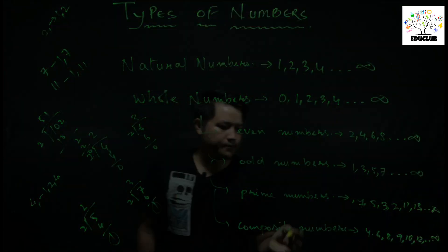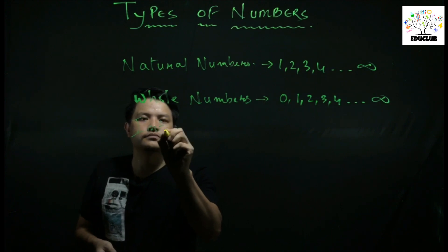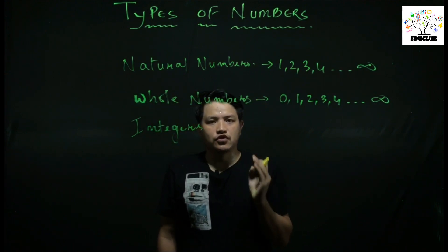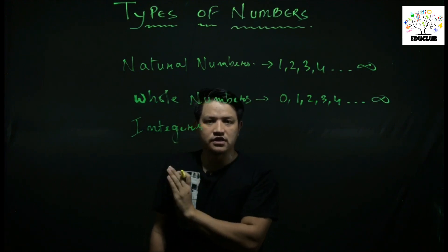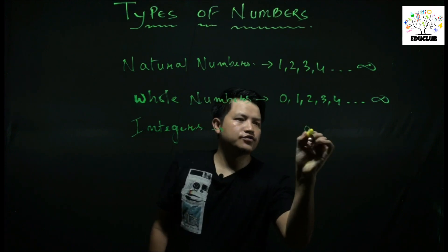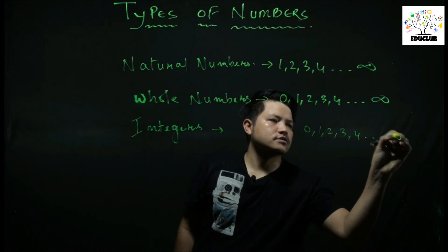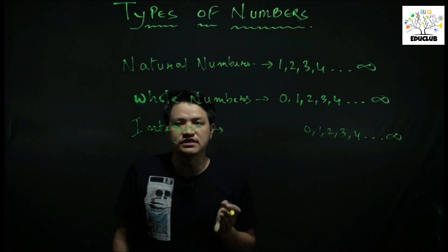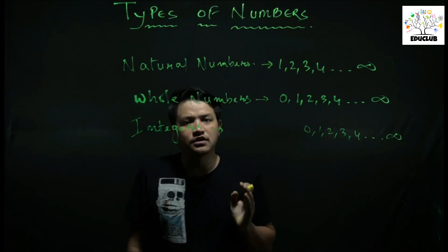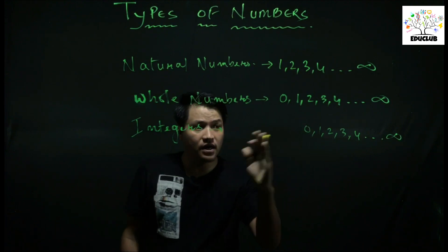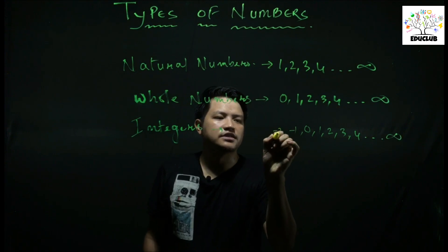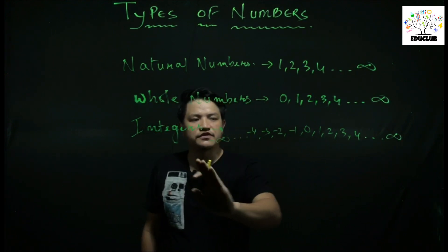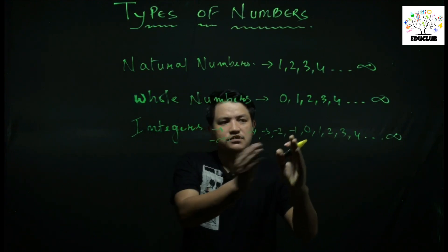Integers include natural numbers, whole numbers, and negative numbers. Examples: 0, 1, 2, 3. Zero is a whole number only. Integers include positive integers, zero (neutral), and negative integers. Negative integers go: minus 1, minus 2, minus 3, minus 4, all the way to minus infinity. So integers are a group of numbers consisting of negative numbers, zero (neutral), and positive numbers.